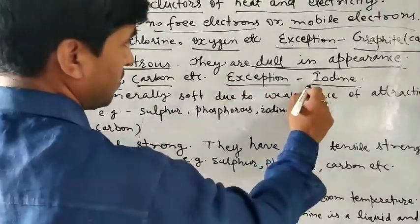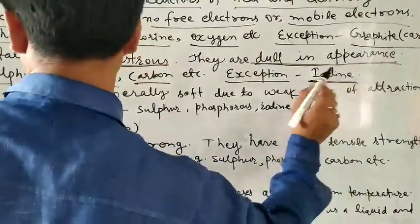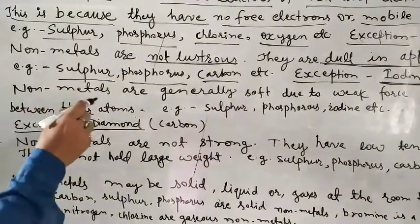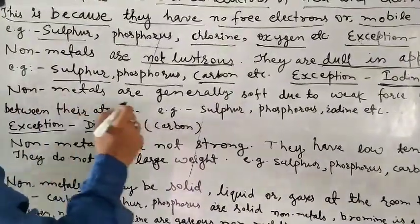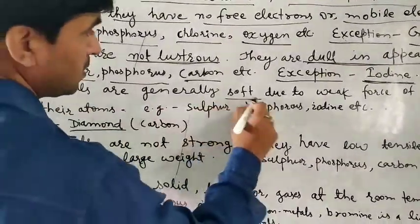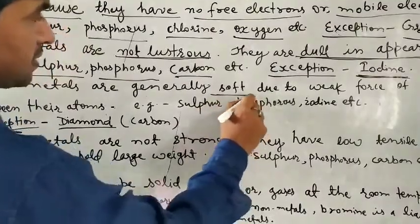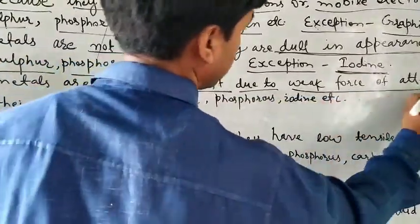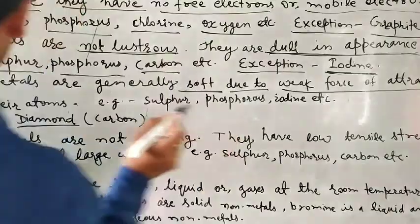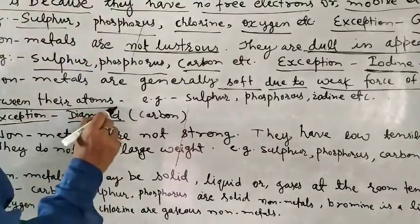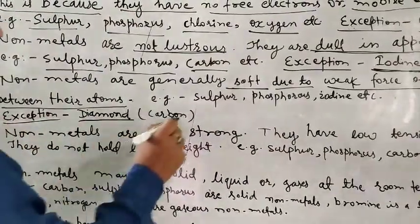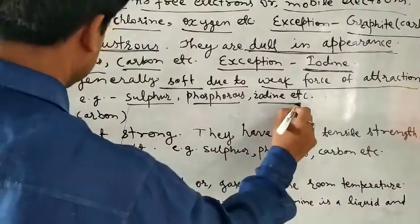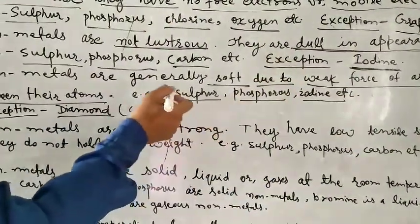The only exception is iodine, which has a lustrous appearance. The fifth property of non-metals is that they are generally soft, due to the weak force of attraction between their atoms. For example, sulfur, phosphorus, and iodine are very soft.